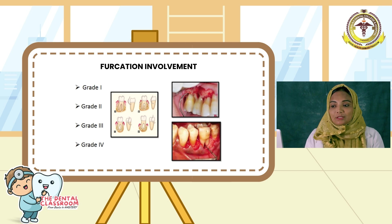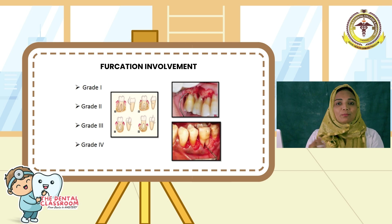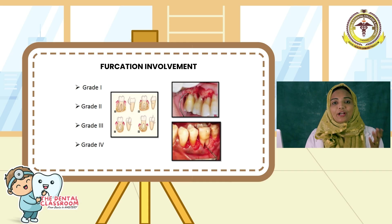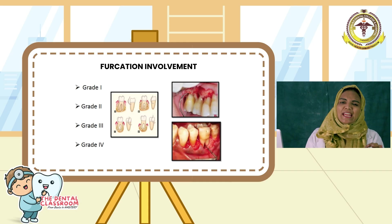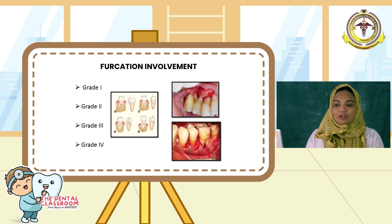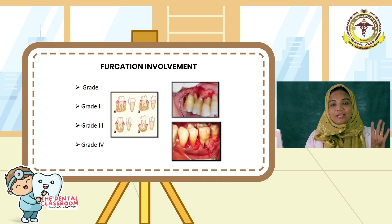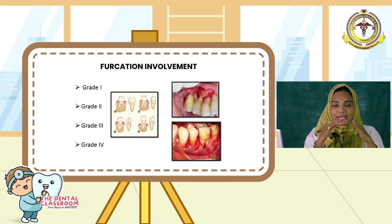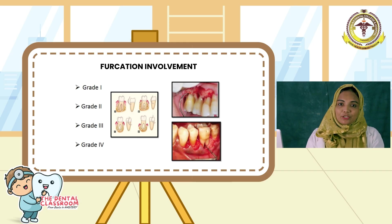Next is furcation involvement: there is bone loss in the furcation region of multi-rooted teeth. According to Glickman's classification — for Grade 1 furcation involvement, there will be incipient bone loss; for Grade 2, there will be partial bone loss; for Grade 3, there will be total bone loss; for Grade 4, there will be total bone loss with exposed furcation. For more detail, you can refer to my previous video lecture on furcation involvement.